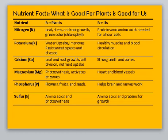Potassium: water uptake, improves resistance to pests and disease. For us: healthy muscles and blood circulation. Calcium: leaf and root growth, cell division, nutrient uptake, strong teeth and bones. Magnesium: photosynthesis, activates enzymes. For us: heart and blood vessels. Phosphorus: flowers, fruits and seeds. For us: helps brain and nerves work.